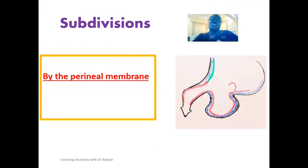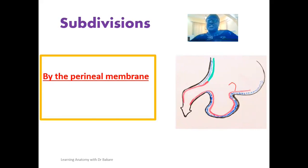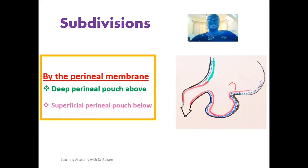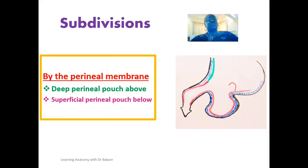It's also good to note that the urogenital triangle is further subdivided into pouches, and this subdivision is created by the perineal membrane. We established that the urogenital triangle is further subdivided into the deep perineal pouch, which is located above, and the superficial perineal pouch, which is located below. The perineal membrane is the basis onto which this subdivision is done.